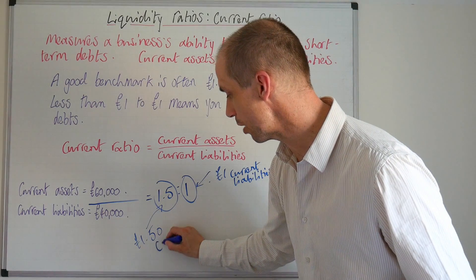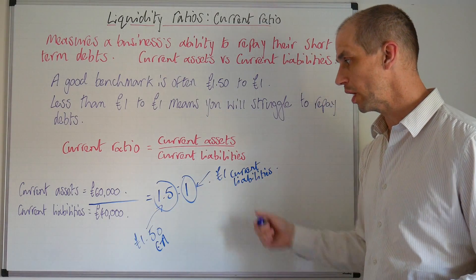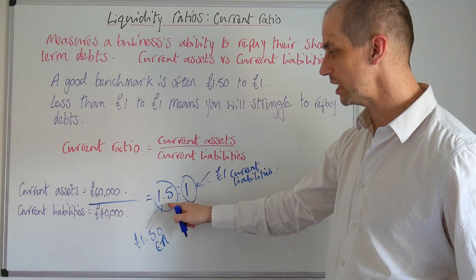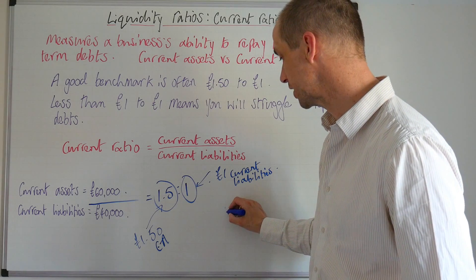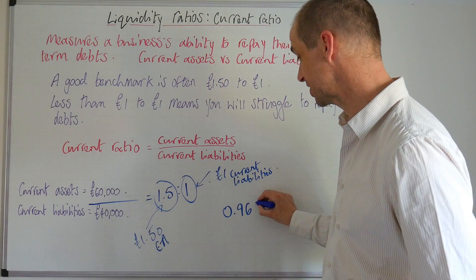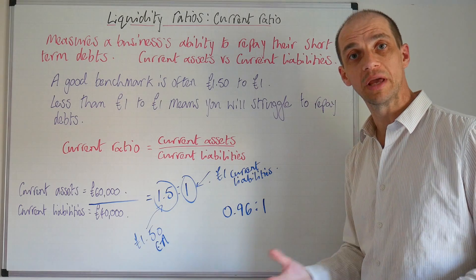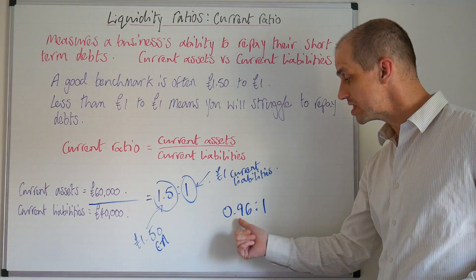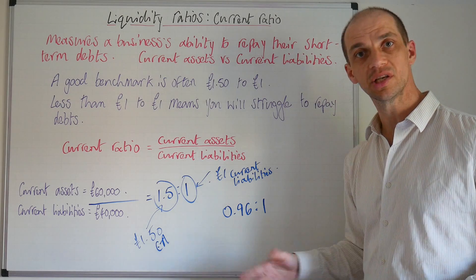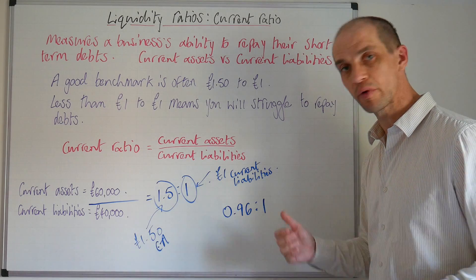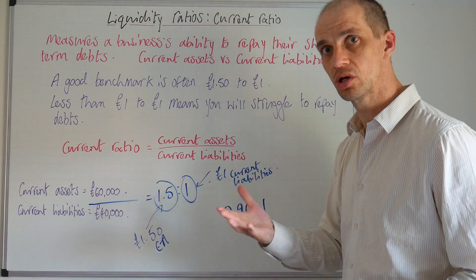That's pretty healthy. But what about in the exam? If you consider two ratios — perhaps they started in the base year at 1.5:1 but then decreased to a ratio of 0.96:1 — what would you be able to say about that? Well, now they only have 96p for every pound of current liabilities — 96p of current assets for every pound of current liabilities. That might be a source for concern and something you'd certainly want to highlight.